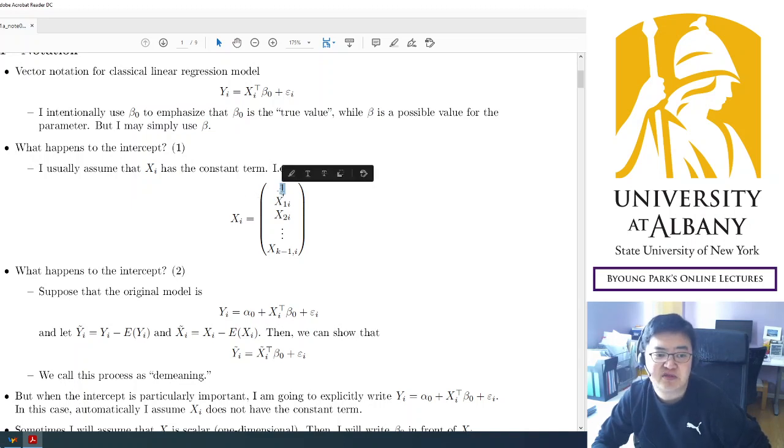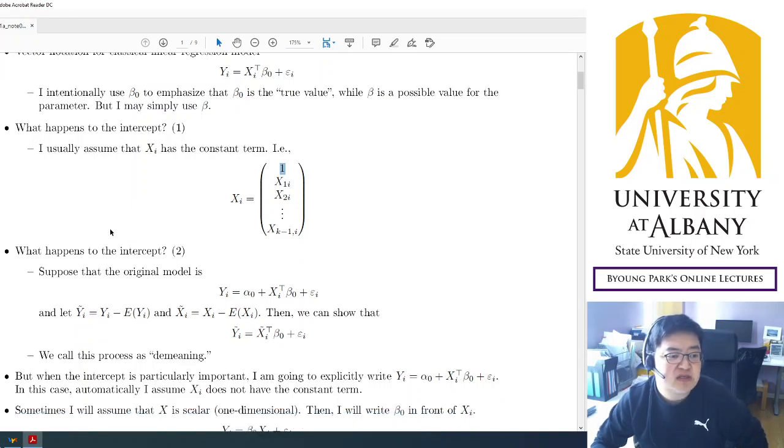you may just simply imagine that x_i includes the constant, the one. So the first element of x is one. And so the first element of beta is the intercept. So this is one simple explanation. Where is the intercept? Or second,